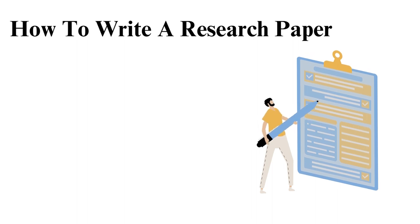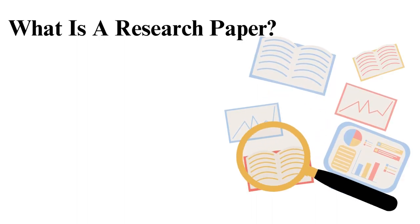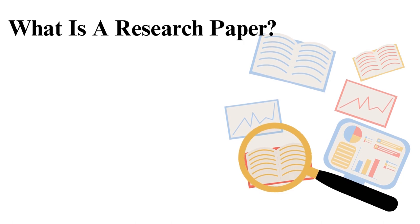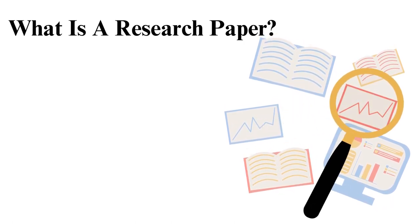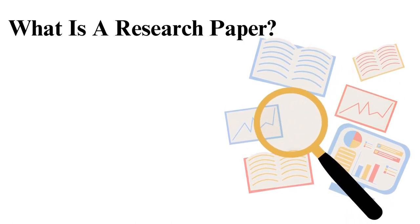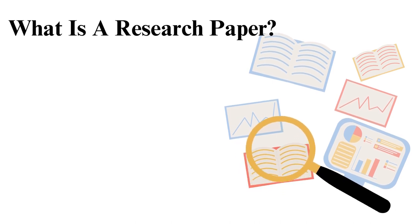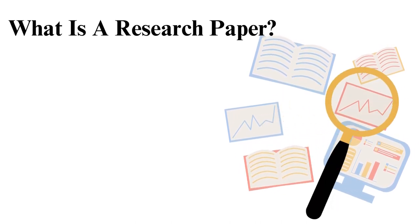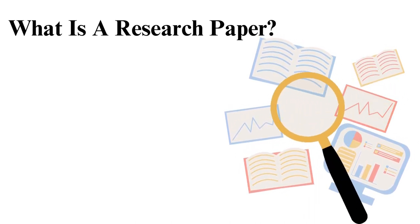How to write a research paper. A research paper is a piece of academic writing that focuses on a topic of research. The research paper seeks to analyze and interpret the findings of the research done.